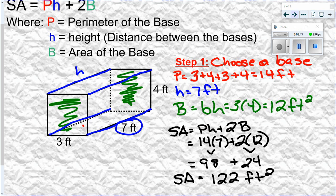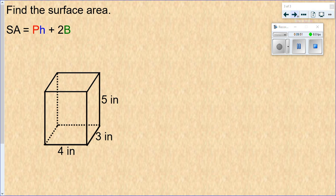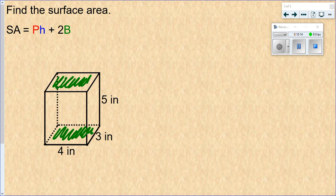Let's look at another example. Step one is to choose a base. You can choose any two pairs of sides — the left and right side, the top and bottom, or the front and back. Let's choose the bottom. These are identical shapes, and you just draw those two rectangles and connect the edges together to end up with this rectangular prism.